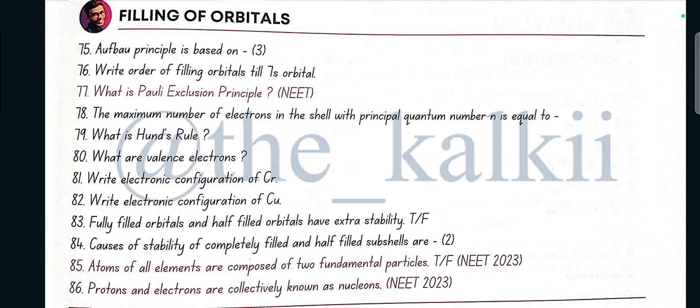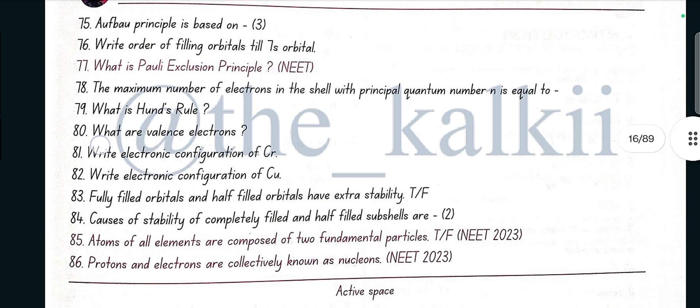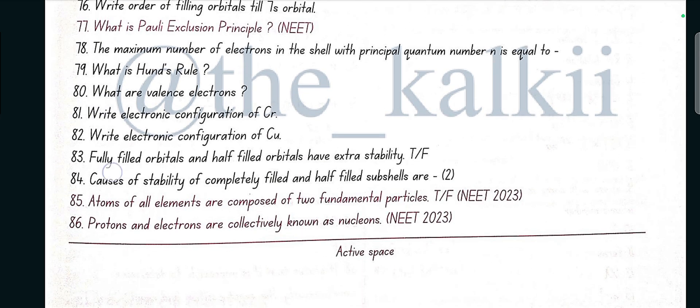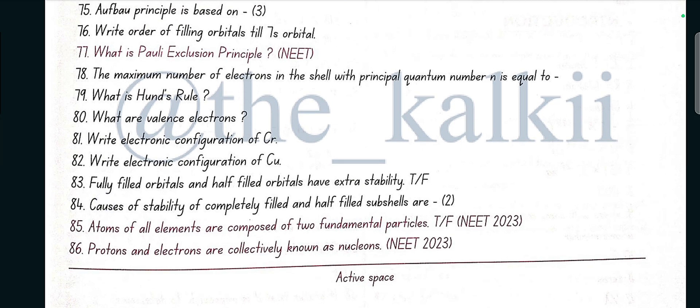Write order of filling orbitals till 7s orbital: 1s, 2s, 2p, 3s, 3p, 4s, 3d, 4p, 5s, 4d, 5p, 6s, 4f, 5d, 6p, and 7s.